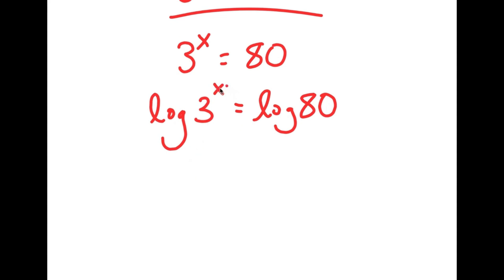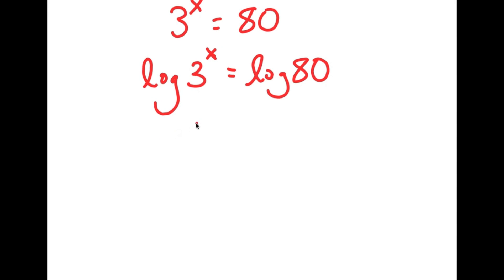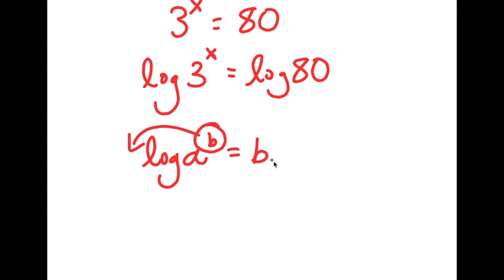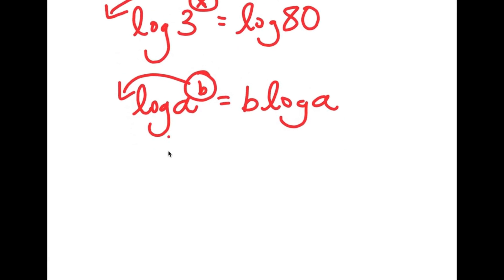Now we want to find the value of x, and to get x it's hard when it's in exponent form, so we want to bring x down to make it a regular term. To do that, there is an important property of logarithms: if there's something in the form log a to the power of b, I can move the b to the front, so this equals b times log a. So in this case I have log 3 to the power of x and I can move x to the front, giving x times log 3.